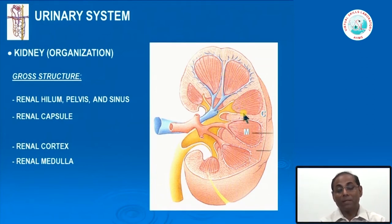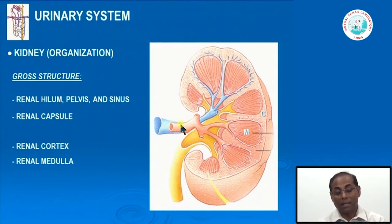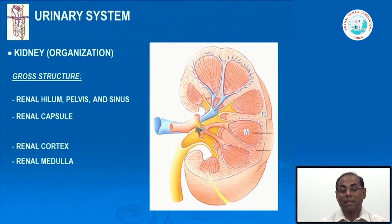The medullary tips open into the renal papilla, forming the calyceal system—major calyces and minor calyces—which drain into the renal pelvis, and from there urine goes into the ureter. Apart from the ureter, the renal hilum contains the renal vein and renal artery—blood comes through the renal artery and leaves through the renal vein.